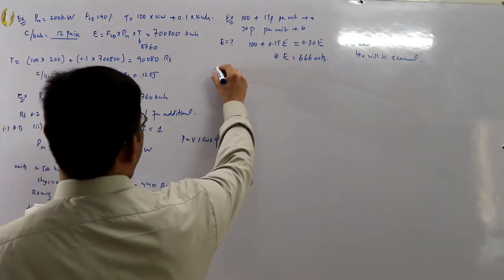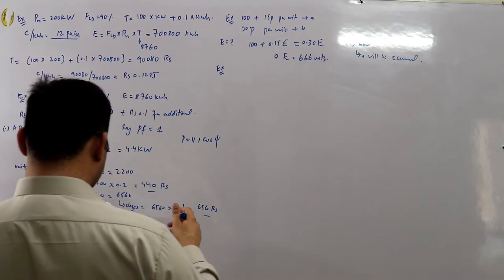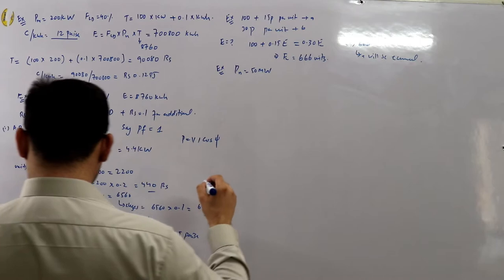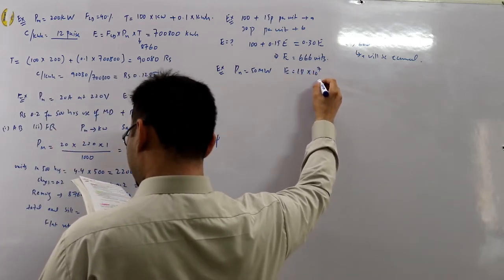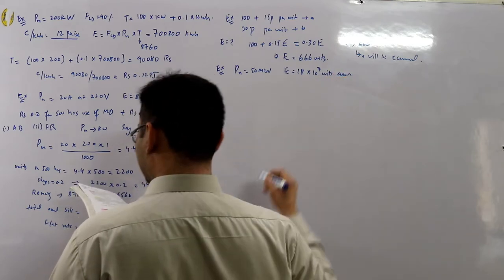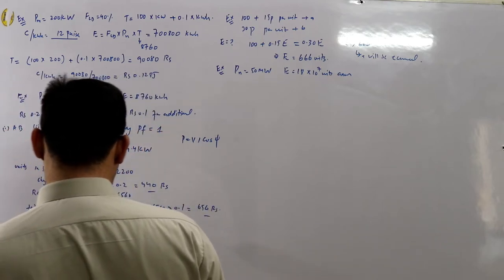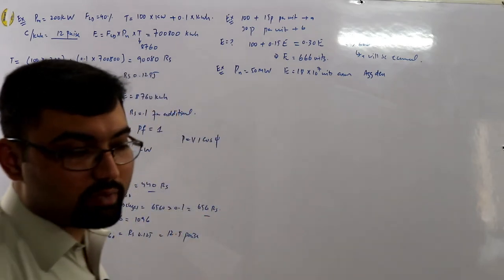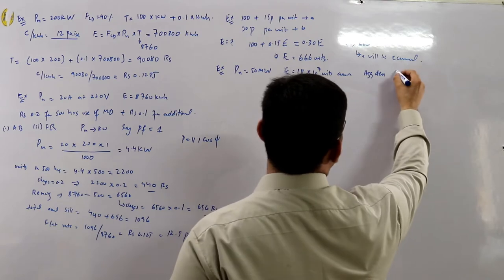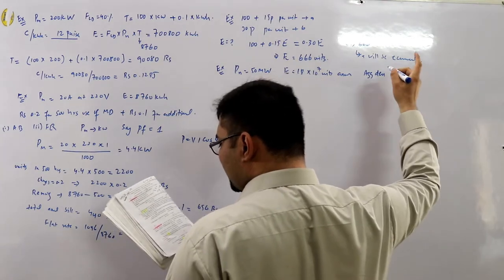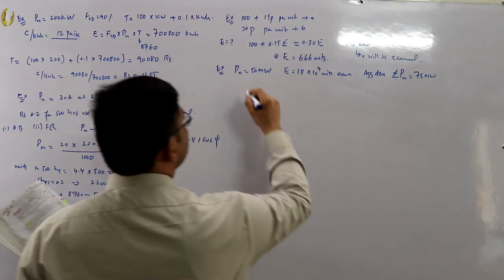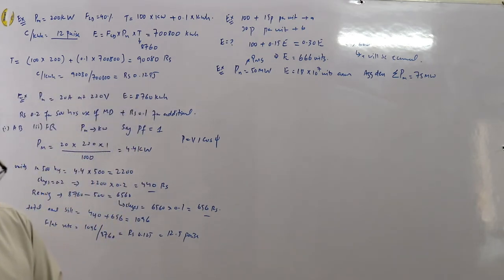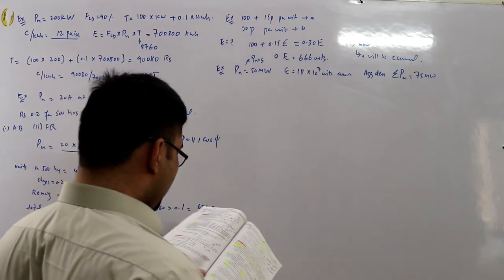Example 5.5: An electric supply company has a maximum load of 50 megawatts and generates 18 × 10⁷ units per annum. Consumers have an aggregate demand of 75 megawatts — meaning the summation of all consumers' maximum demands equals 75 megawatts, related to the diversity factor.